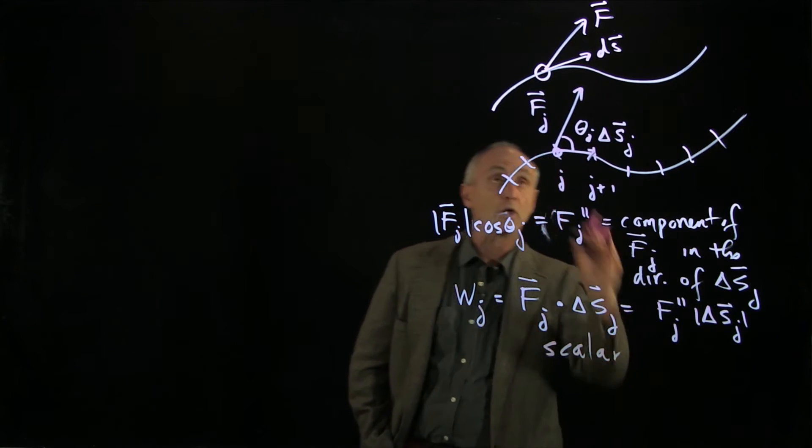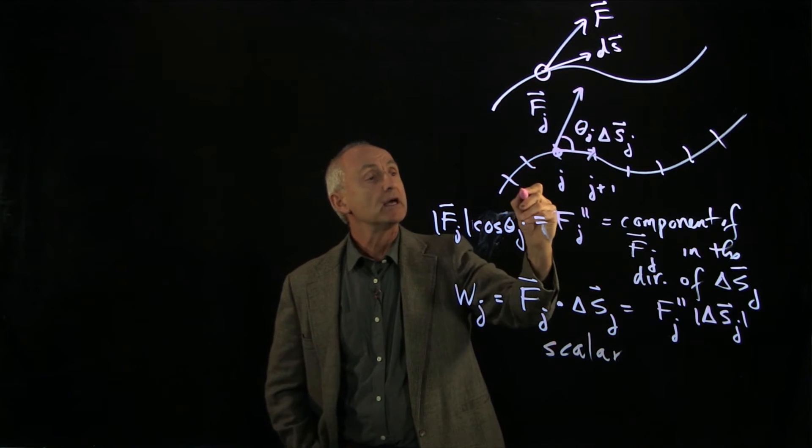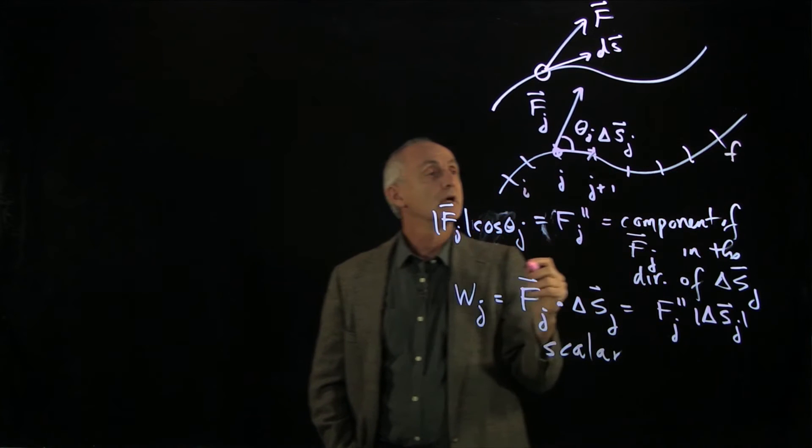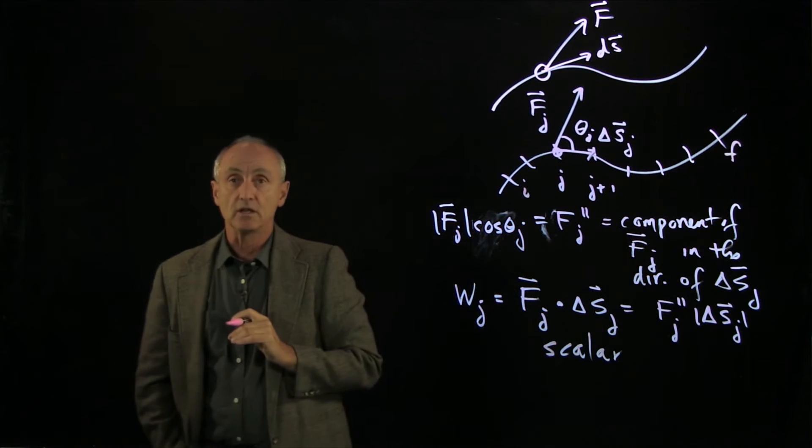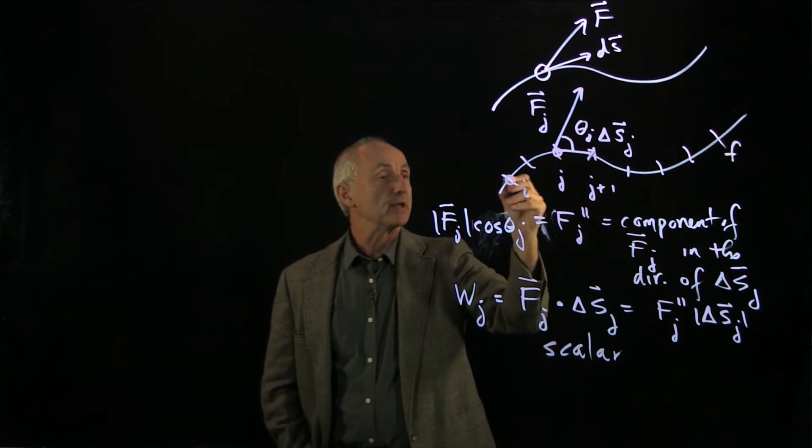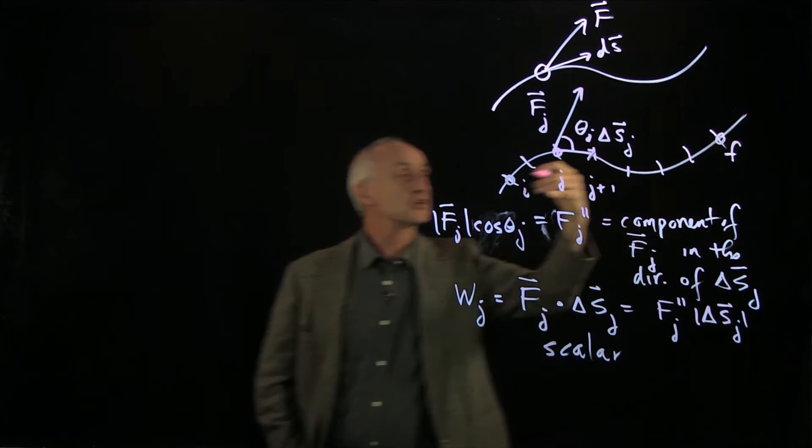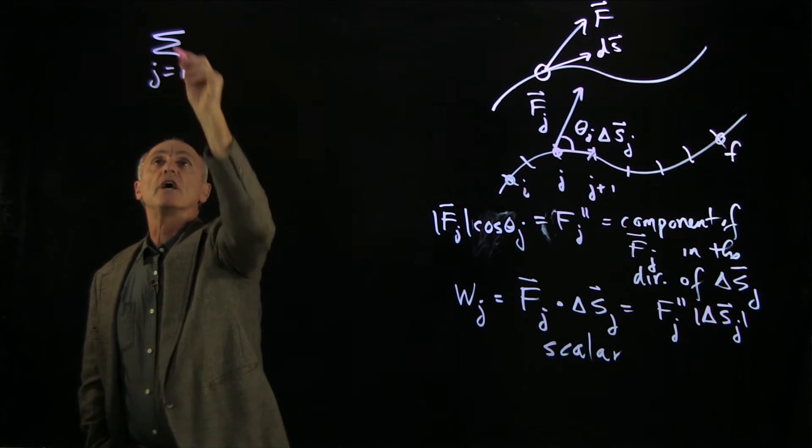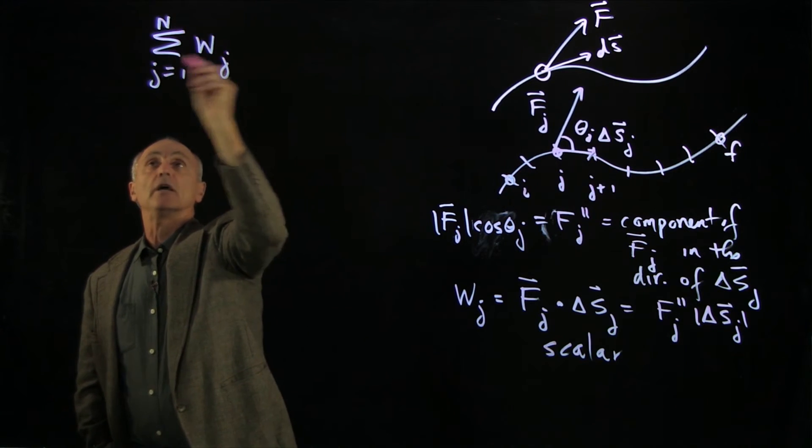And when we want to find the total work, what we have to add up is from some initial point to some final point, how much work is being done in taking our particle from the initial position to the final position. And it's just the sum for all of these j's. And let's say we have n of them of wj.